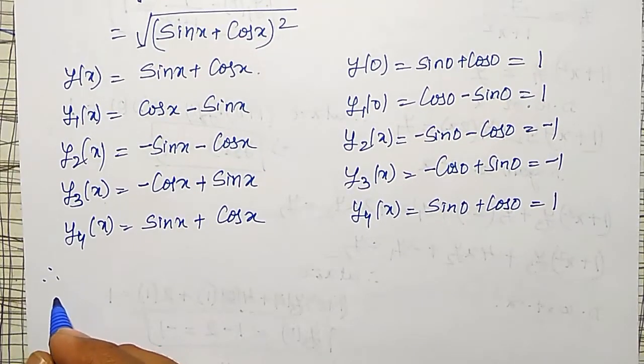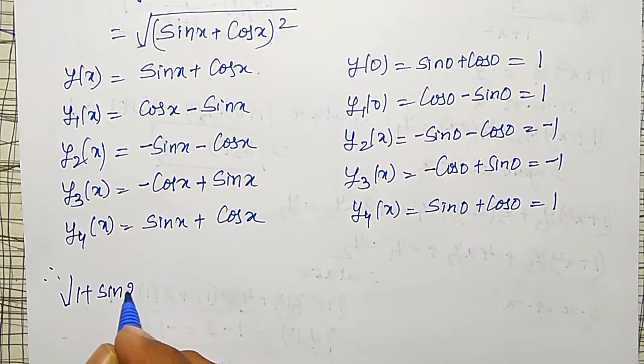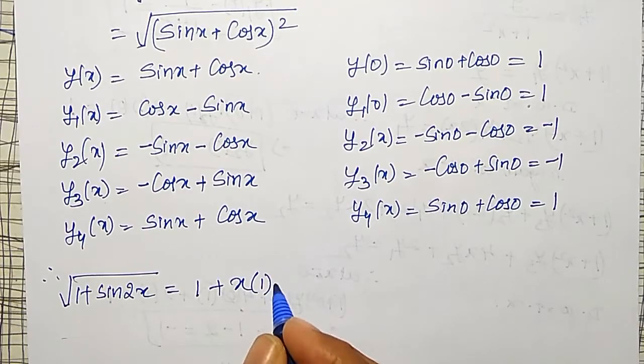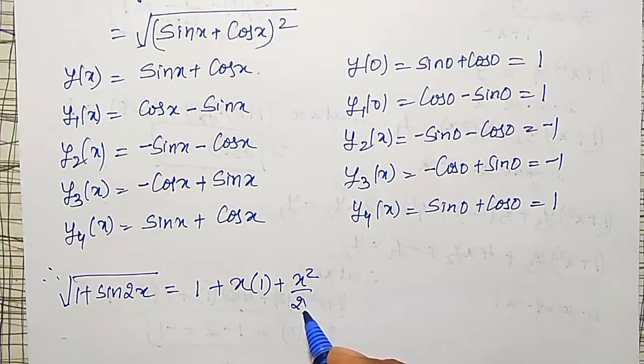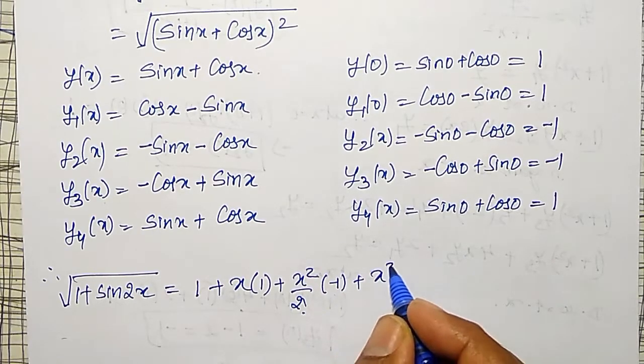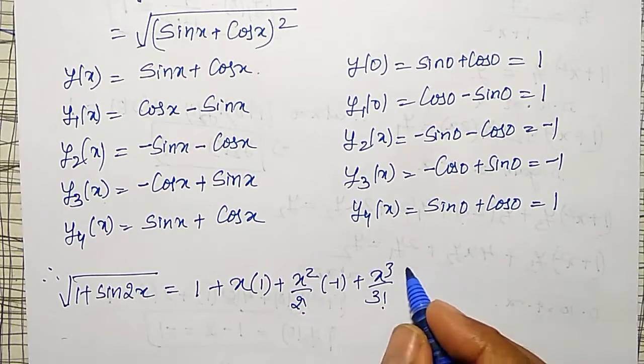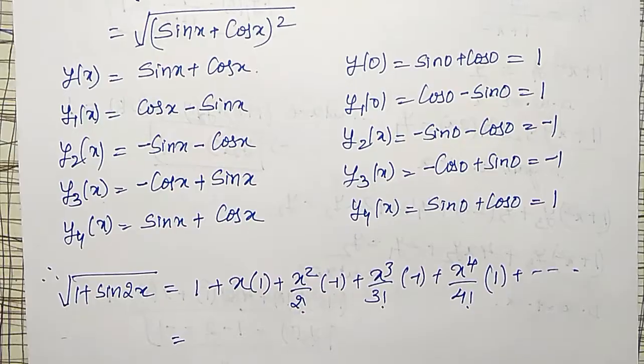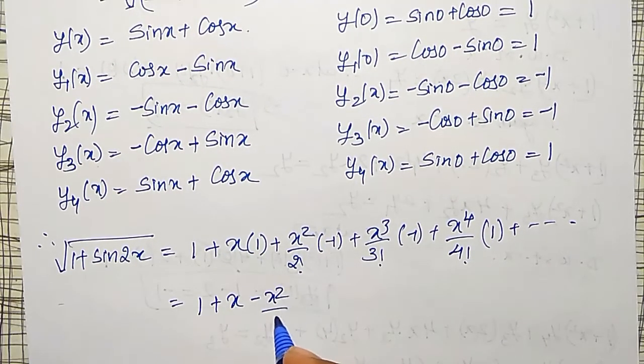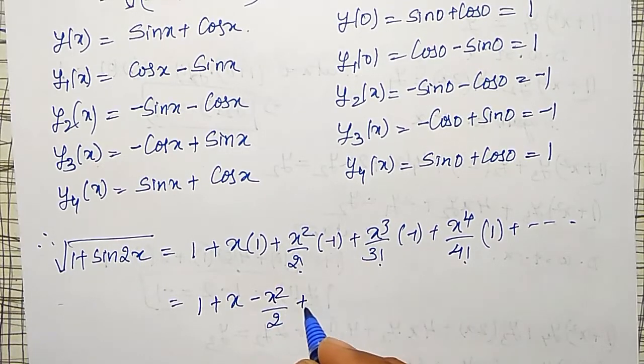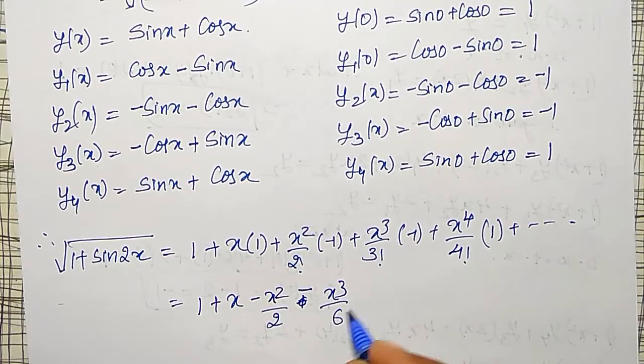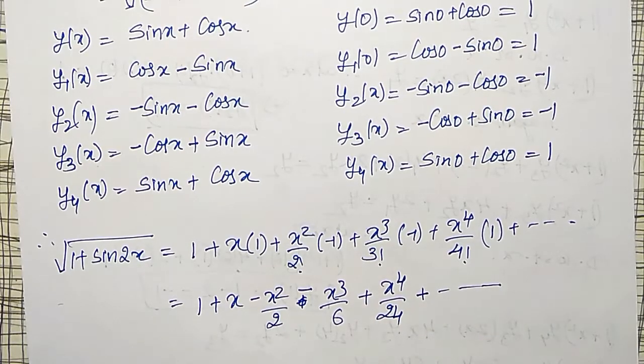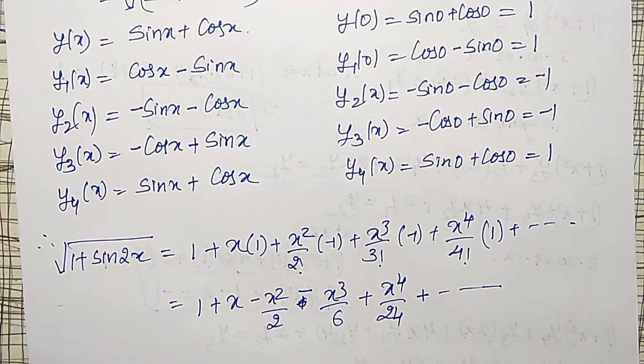Therefore y(x), that is square root of 1 plus sin 2x is equal to, I can write it as y of 0, my y of 0 value is 1, plus x into y1 at 0 is 1, plus x squared by 2 factorial into y2 at 0 is minus 1, plus x raised to 3 by 3 factorial into y3 at 0 is again minus 1, plus x to the power 4 by 4 factorial into plus 1 plus so on. This is the required Maclaurin series of square root of 1 plus sin 2x. Differentiation we have made easier.